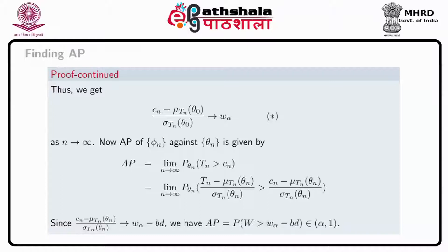The asymptotic power AP of phi_n against theta_n is given by AP equal to the limit as n tends to infinity of the probability that T_n greater than C_n under theta_n, which equals the probability that T_n minus mu(T_n, theta_n) divided by sigma(T_n, theta_n) is greater than C_n minus mu(T_n, theta_n) divided by sigma(T_n, theta_n) under theta_n. Using assumptions A3 to A5 and A1, the latter expression goes to w_alpha minus BD, giving AP equal to probability that W greater than w_alpha minus BD.